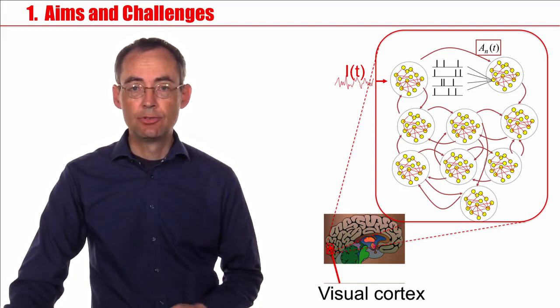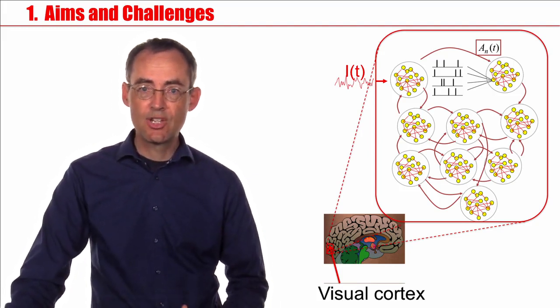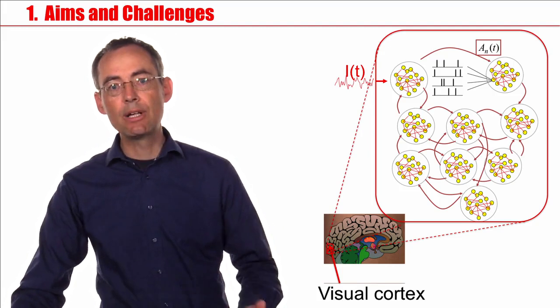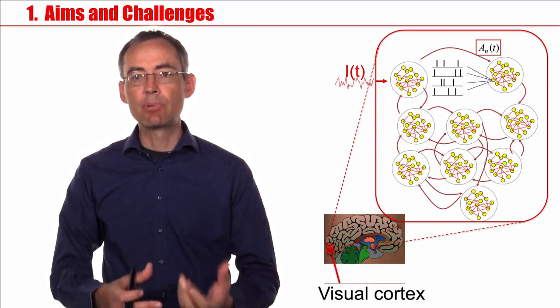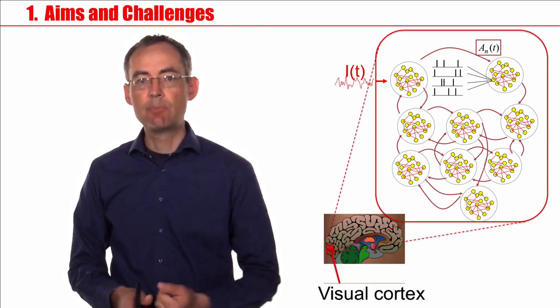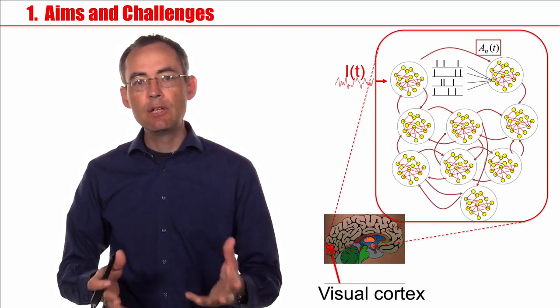Our brain consists of thousands, hundreds of thousands of neurons. These neurons are organized in populations, and these populations can do impressive things. Let me give you two examples.